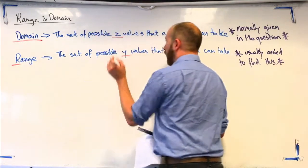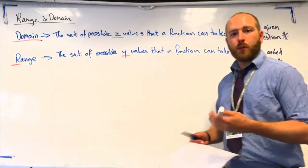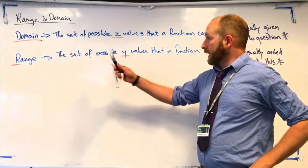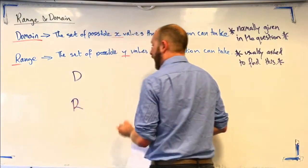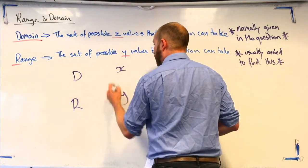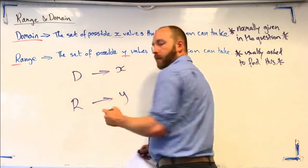So, range y and domain to x. A quick, easy way to remember that is d comes before r in the alphabet, and x comes before y in the alphabet. So, domain is x, and range is y.